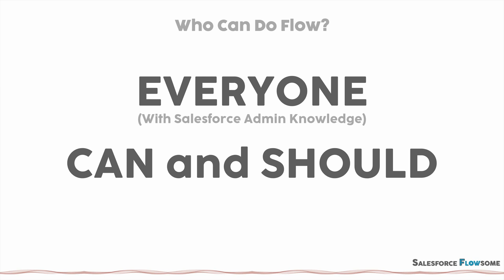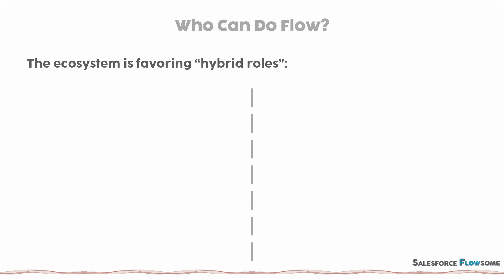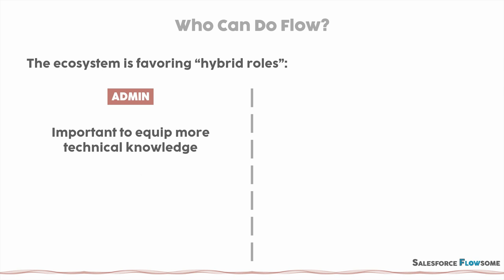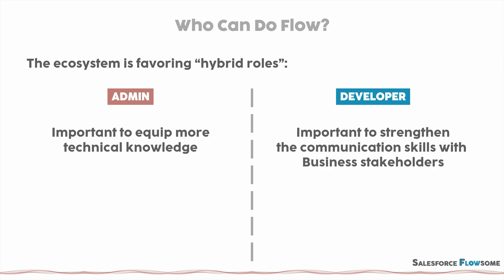And why do I say everyone should? Right now we can see a trend that digital transformation needs to happen really fast. That means the ecosystem is favoring the hybrid role. If you have skill sets from both the business side and technical side, you will have a really good opportunity in the ecosystem. If you're an admin, right now it's really important for you to equip some technical knowledge. On the other hand, if you're a developer, it's very important for you to strengthen your communication skills with business stakeholders.